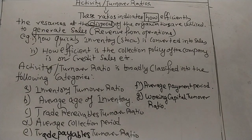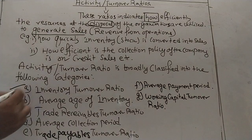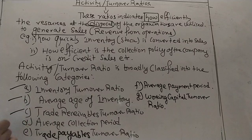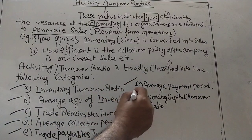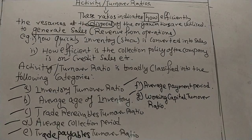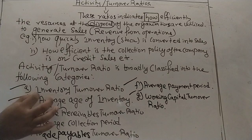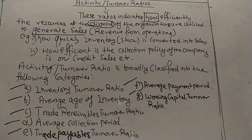Good afternoon students. Today we are going to start with activity or turnover ratios. Under activity or turnover ratios, we are going to calculate: inventory turnover ratio, average age of inventory, trade receivables turnover ratio, average collection period, trade payables turnover ratio, average payment period, and working capital turnover ratio. Today's class will only deal with what is an activity or turnover ratio, and I will explain the very first formula — inventory turnover ratio.